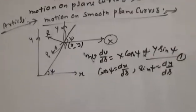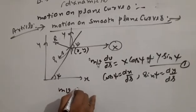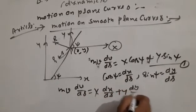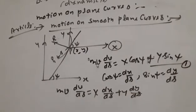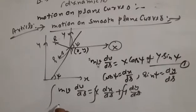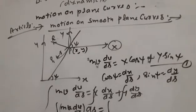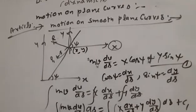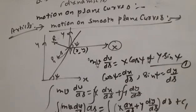Substituting, we get: m·v·(dv/ds) = X·(dx/ds) + Y·(dy/ds). Now integrating with respect to s, we integrate each term: integrating m·v·(dv/ds) with respect to s, and X·(dx/ds) plus Y·(dy/ds) with respect to s.